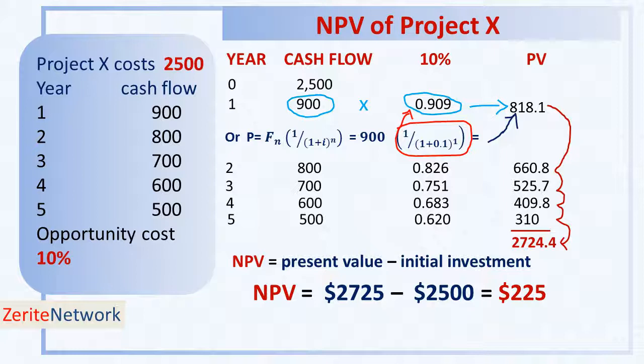Project X shows that the present value of cash inflows, $2,725, is greater than the present value of cash outflows, $2,500. Therefore, it generates a positive NPV of $225. This project will add to the wealth of the owners, and therefore it will be accepted.